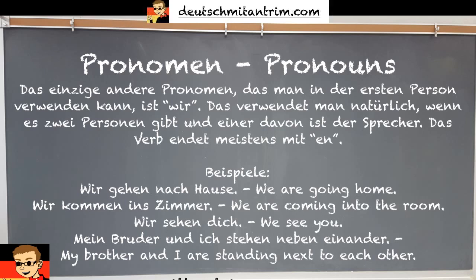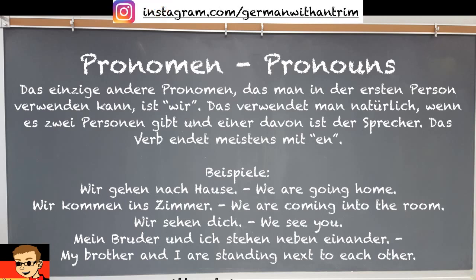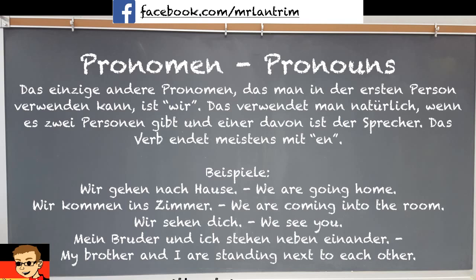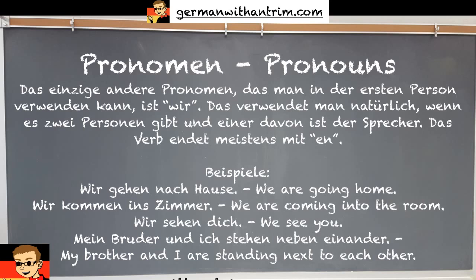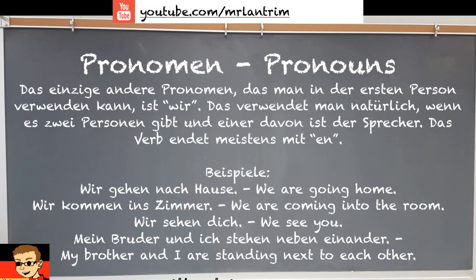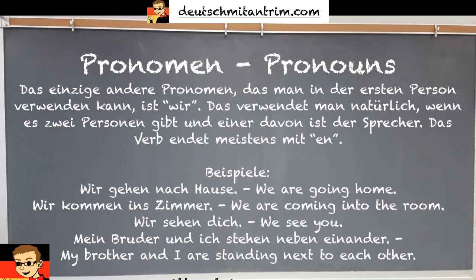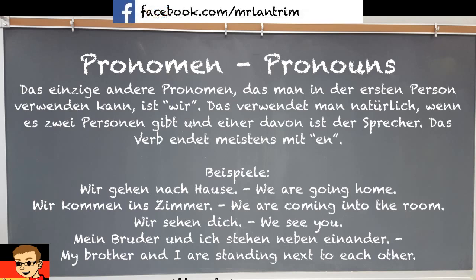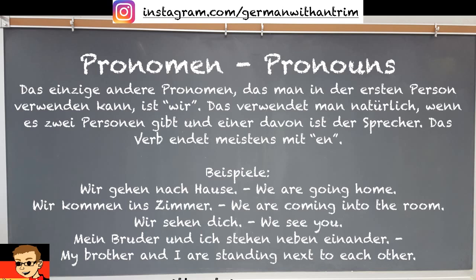You don't always have to use the pronoun itself — you can combine nouns with 'ich' to form a compound subject. For example: 'Mein Bruder und ich stehen nebeneinander' — my brother and I are standing next to each other. Even though it's not a single word, 'mein Bruder und ich' is the first part of the sentence, 'stehen' is the verb in second position, and 'nebeneinander' is the prepositional phrase telling where they are.